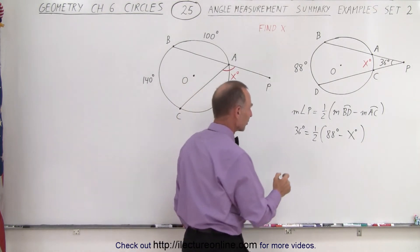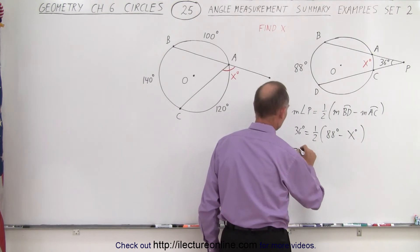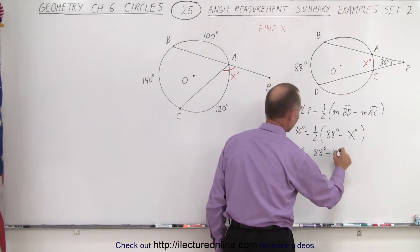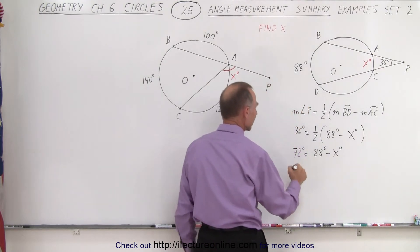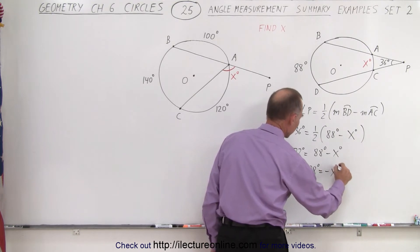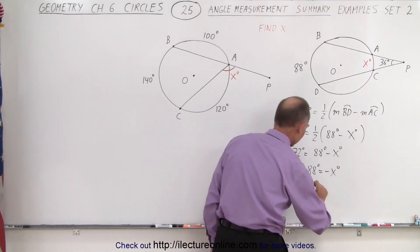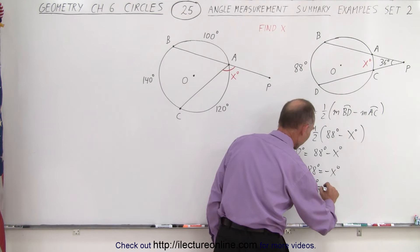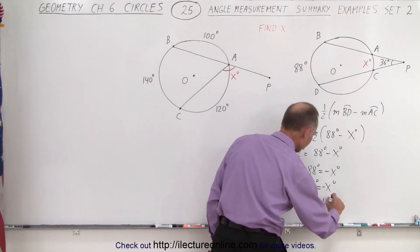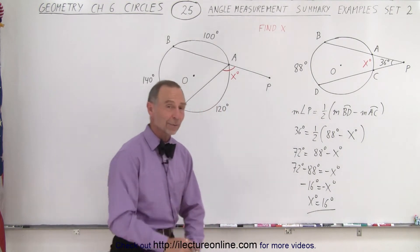So now we multiply both sides by two, so we get 72 degrees is equal to 88 degrees minus x degrees. Moving the 88 across, we get 72 degrees minus 88 degrees equals minus x degrees. So this is minus 16 degrees is equal to minus x degrees or x degrees equals 16 degrees. So in this case, x equals 16.